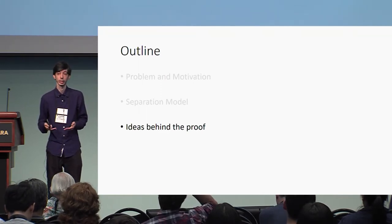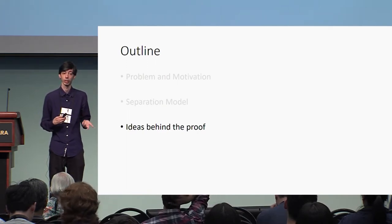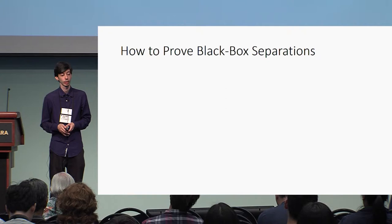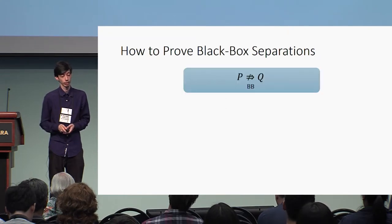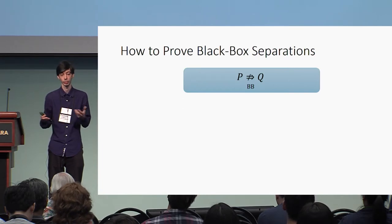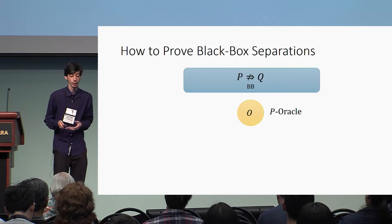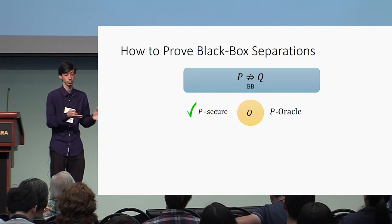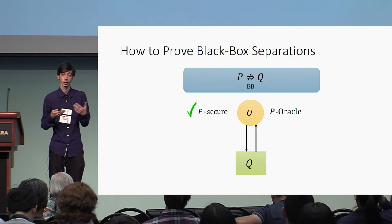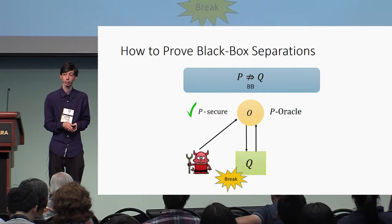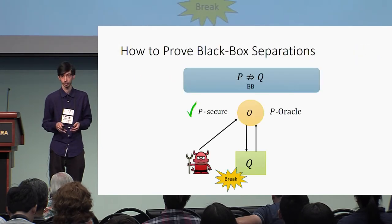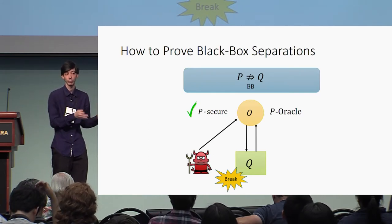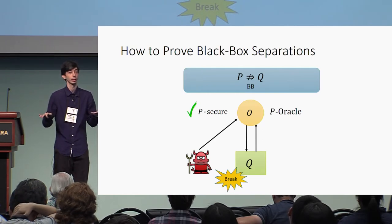Now I'll go into more detail behind the proof ideas. Let's recall the standard method for proving black box separations. To prove a black box separation of Q from P, we need to define an oracle that securely realizes P—meaning no adversary breaks P—but any construction of Q relative to this oracle can be broken using a polynomial number of queries. If we show such an oracle, we have a separation between P and Q.